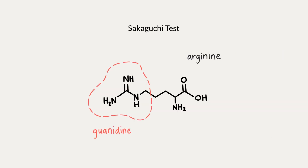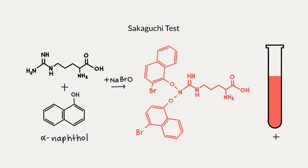The Sakaguchi test detects guanidine groups, so it specifically detects the amino acid arginine. The principle is that in alkaline solution, arginine reacts with alpha-naphthol and sodium hypobromite, resulting in a red coloured complex which indicates a positive test. Any protein that contains arginine will give a positive result.